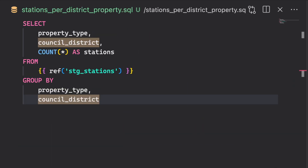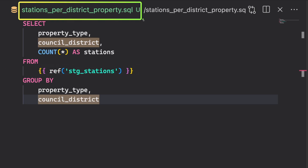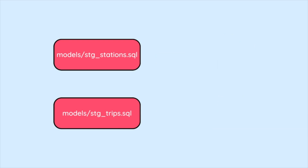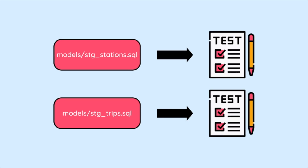By breaking down the model into multiple models, you can now reuse the data models in other models. Your team members can also work on different parts of the project simultaneously. Because each model is self-contained, it can also be easily tested and validated.